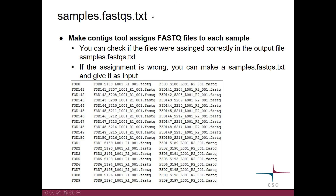Let's have a look at the output files. The make contigs tool assigns the FastQ files to each sample based on the FastQ file name. This output file allows you to check if the assignment was correct. For example, for this sample, it has assigned these two FastQ files.